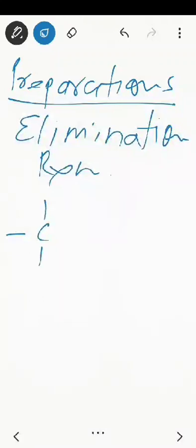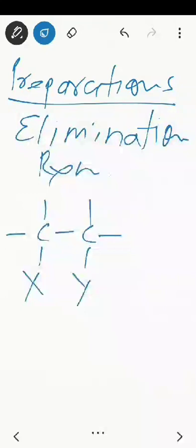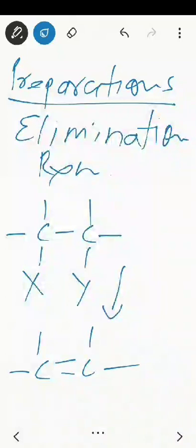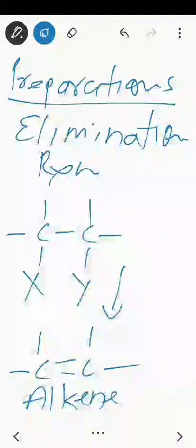We can simply represent the elimination reaction like this: we have a saturated compound, and when this compound undergoes elimination reaction it gives an alkene, along with another byproduct compound. So elimination reactions are a major route for the formation of alkenes.